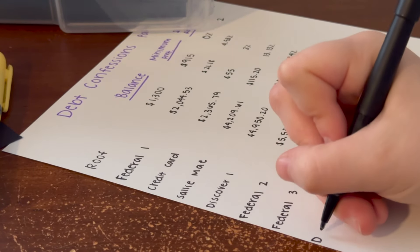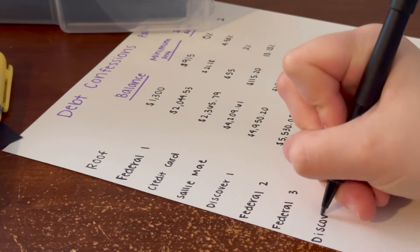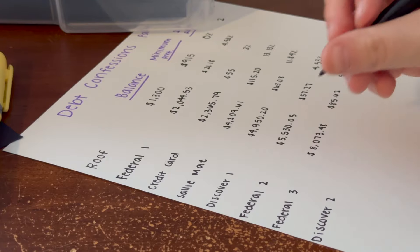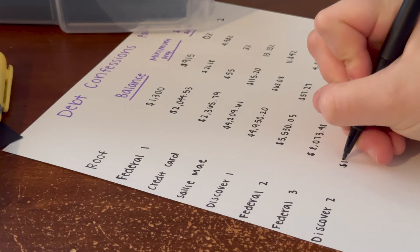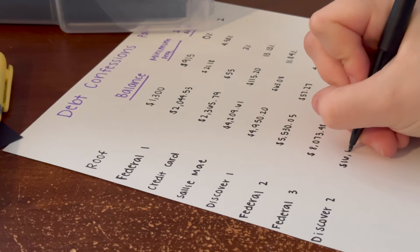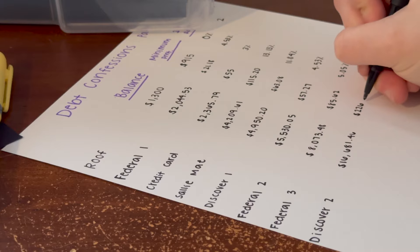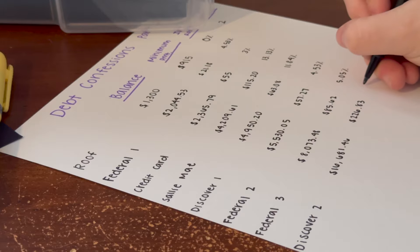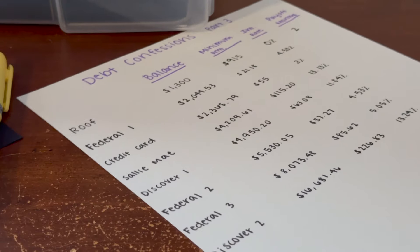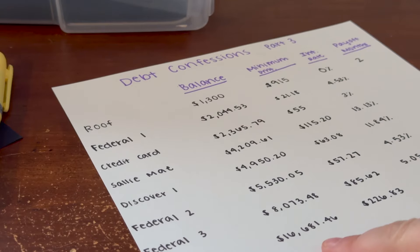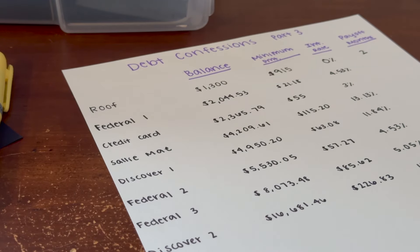The last one is the big one—this is the biggest and the last. This is my second part of my Discover student loan and this one's got a balance of $16,681.46. The payment on this is $226.83 and the interest rate is 13.24%.